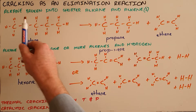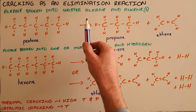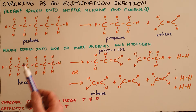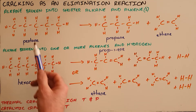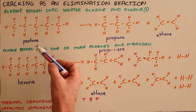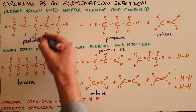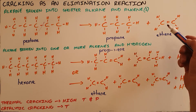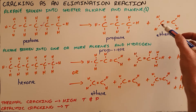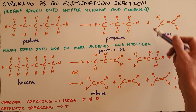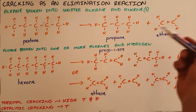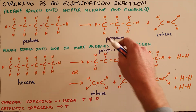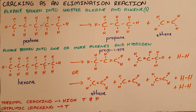The first type is where an alkane is broken into a shorter chain alkane and an alkene or number of alkenes. As an example, here we have pentane that under the right conditions is broken into a propane molecule and then, because there is now a shortage of hydrogens, the shorter chain — in this case ethene — forms a double bond. So the first type of cracking is where an alkane is broken up into an alkane and an alkene.